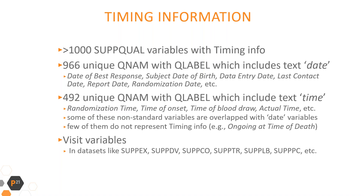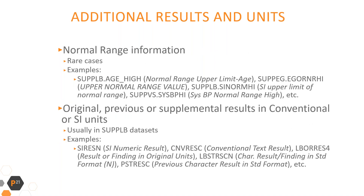Another example of timing information in SUPPQUAL datasets is visit variables. Violation of CDISC compliance is also utilization of SUPPQUAL datasets for unexpected variables which represent normal range information, though such cases are quite rare.